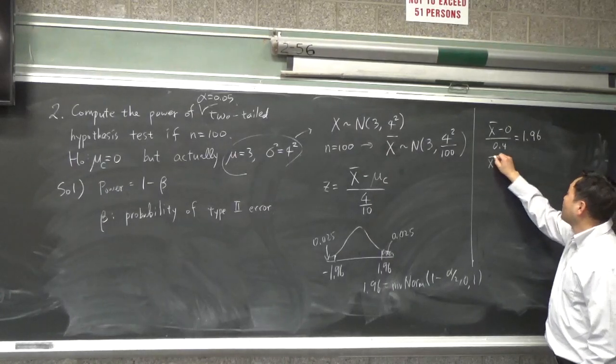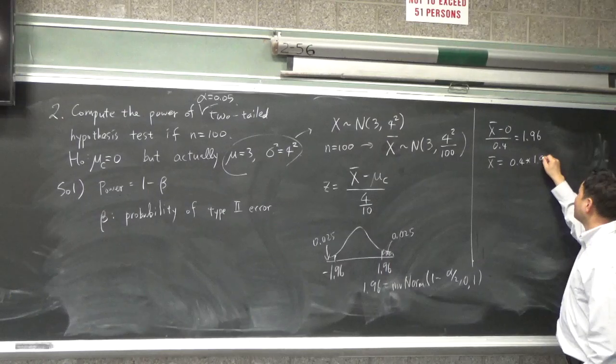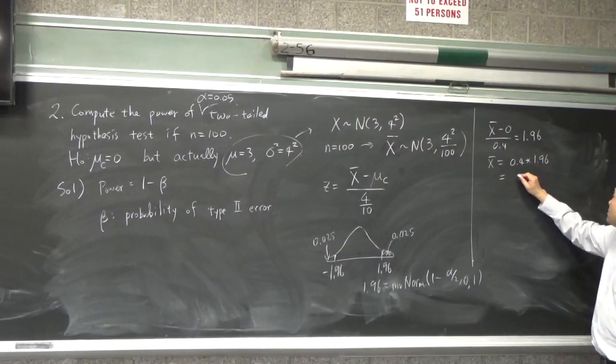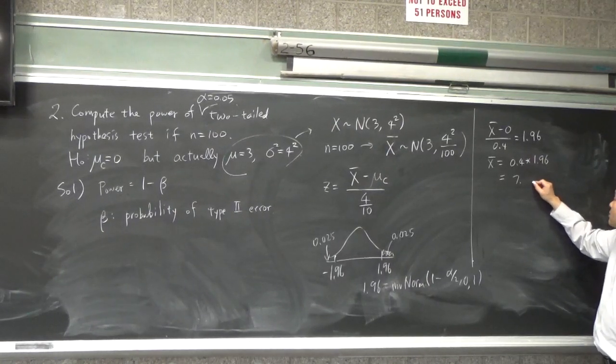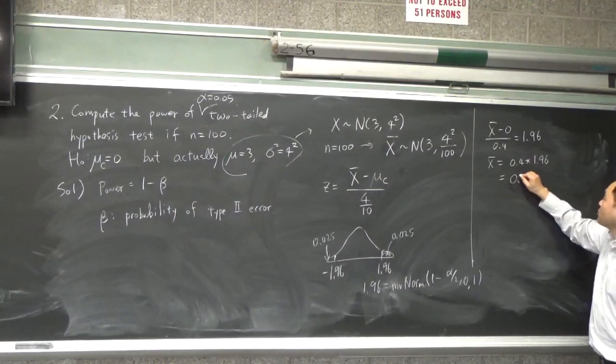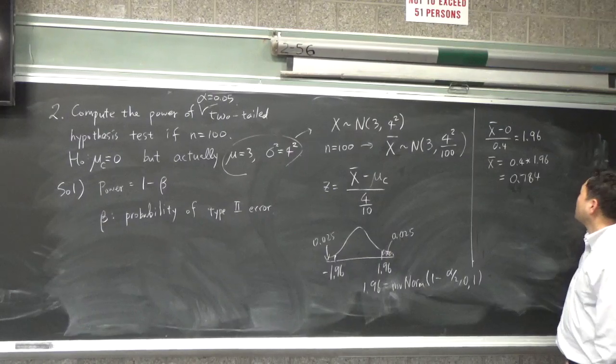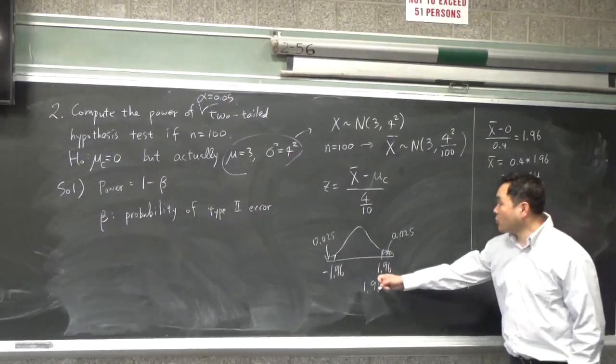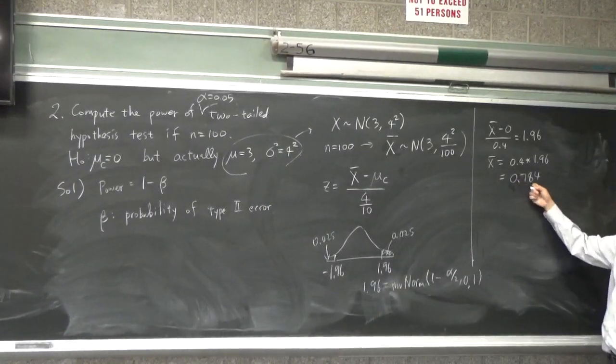So you have x bar equal to 0.4 times 1.96, which is 7.84? No, 0.784. Oh, yeah, 0.784, okay, good.